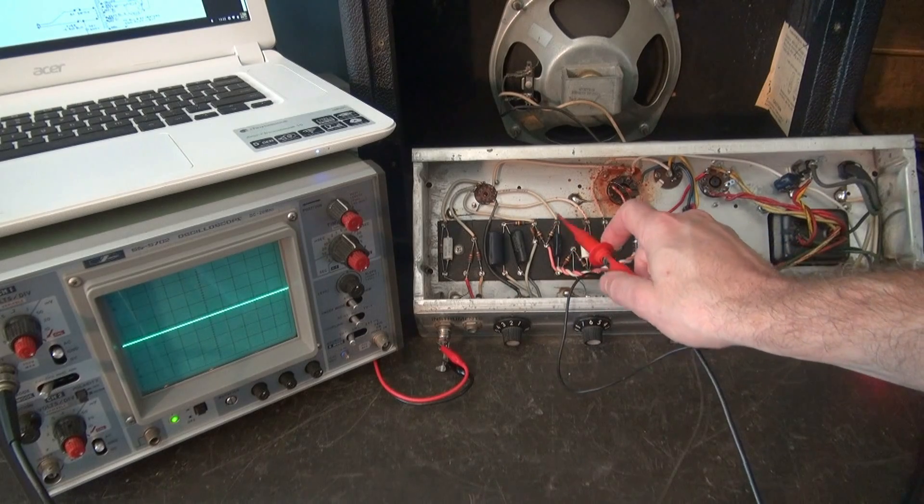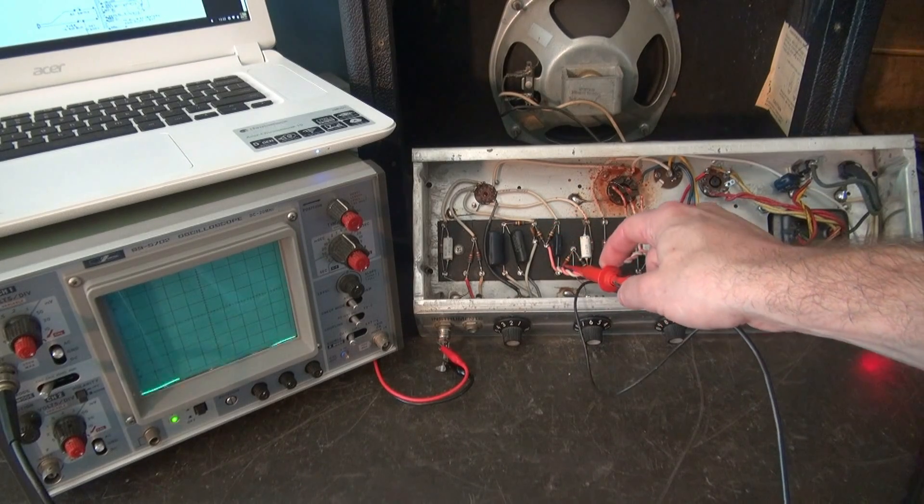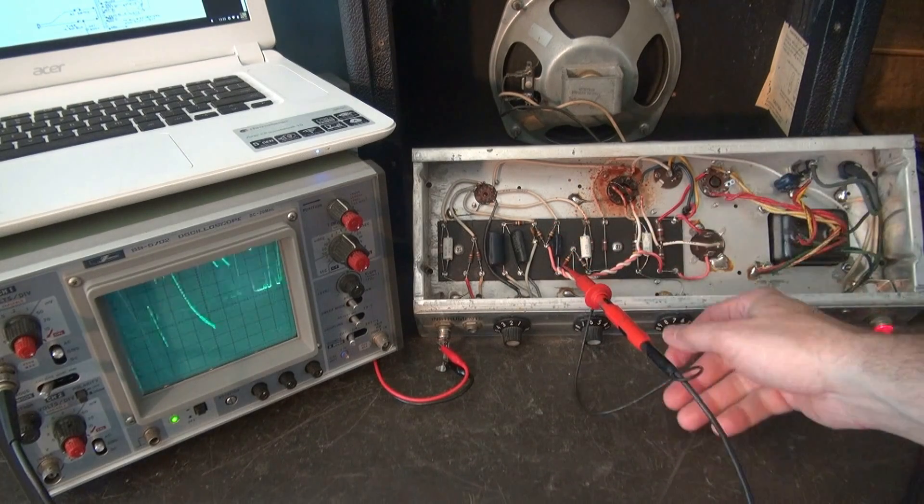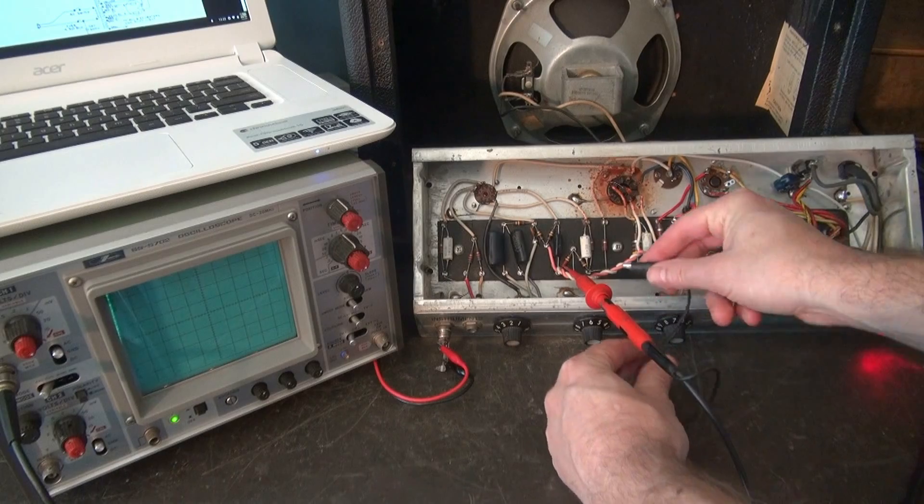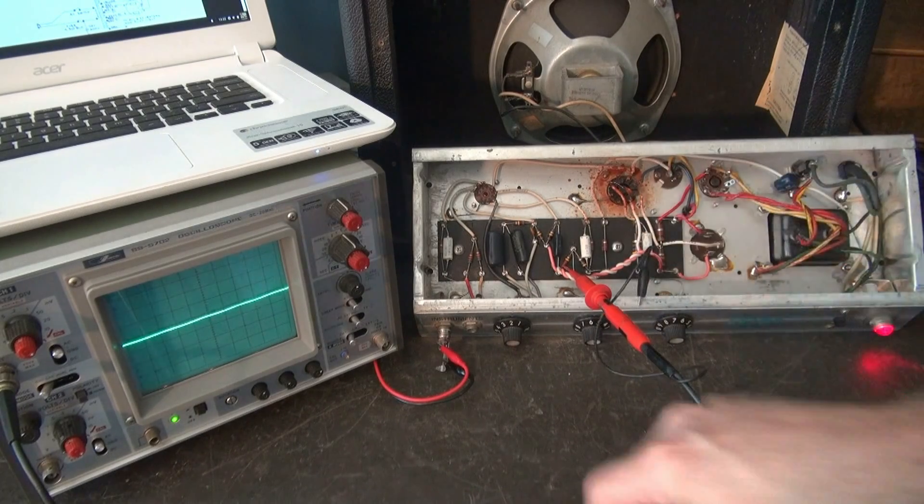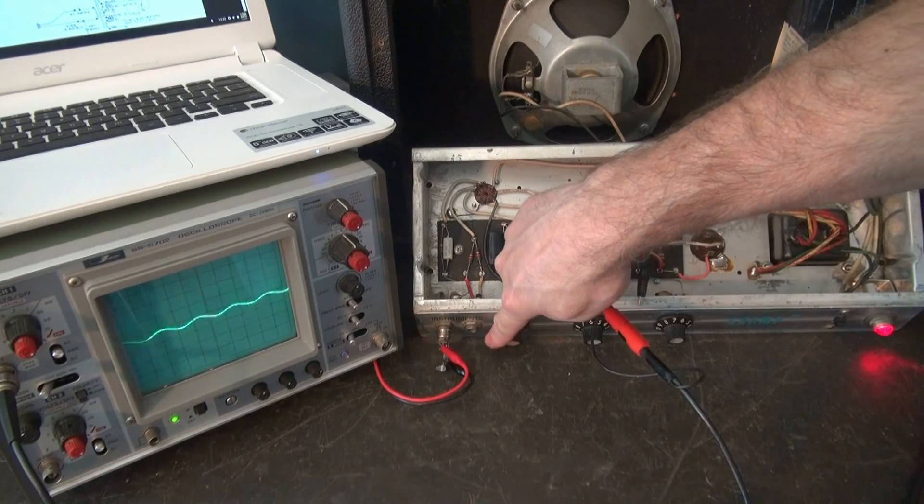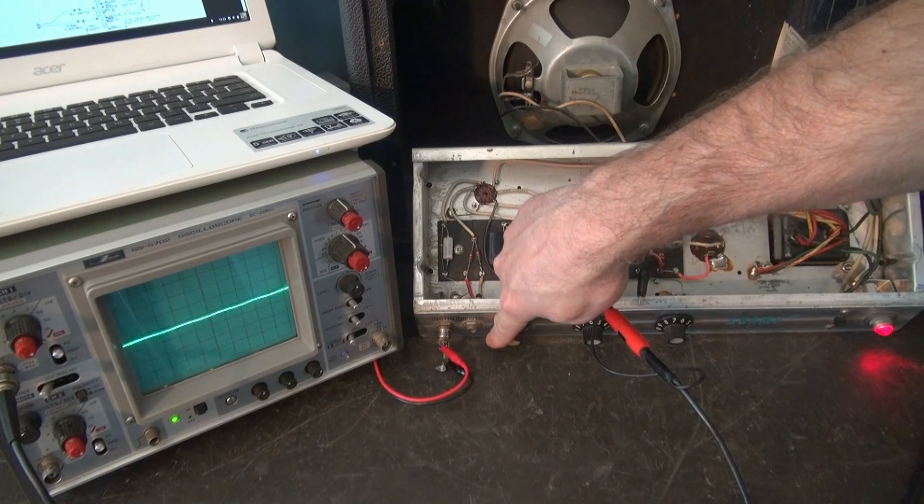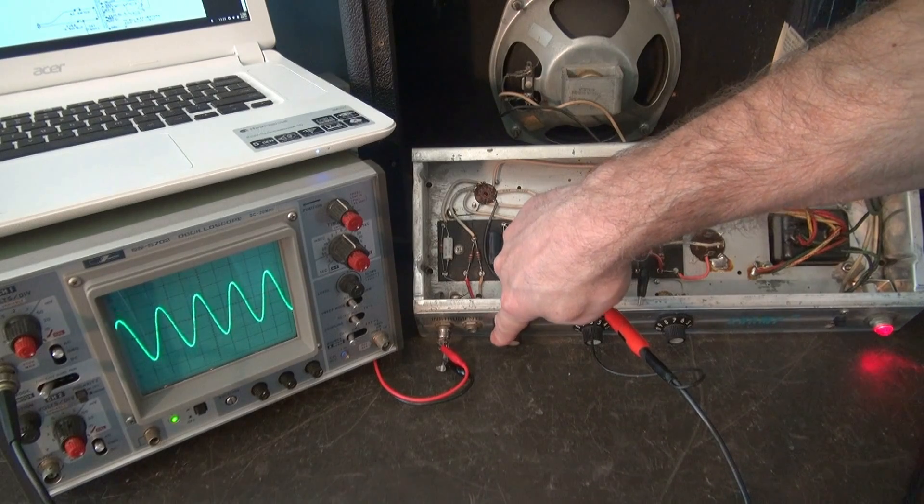Now, let's go to the other side of that capacitor, which is the 0.022. Just knocked my ground lead off. I've got to be careful there. There we go. Bring it up. There it is. That's the signal going to the 6V6 grid.